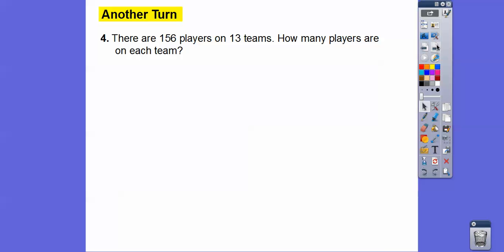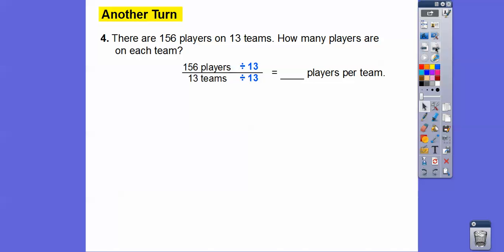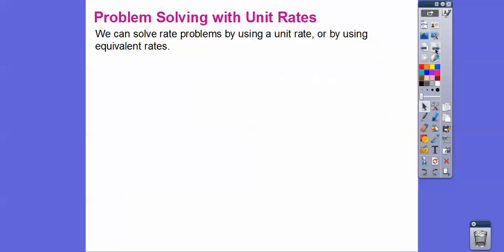There are 156 players on 13 teams — how many players are on each team? We write this as a rate: 156 players for 13 teams. Then we divide the top and bottom by 13. 156 divided by 13 is 12. So there are 12 players on each team.